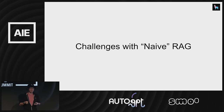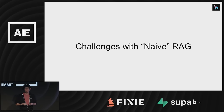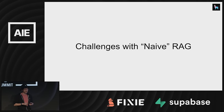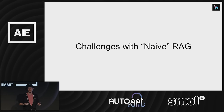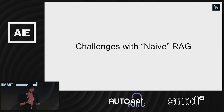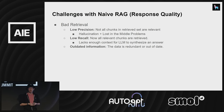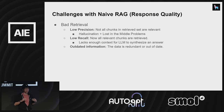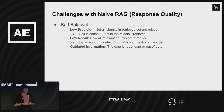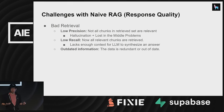As developers are actually building these applications, they're realizing that this isn't quite enough. There are certain issues that are blockers for actually being able to productionize these applications. So what are these challenges with Naive RAG? One aspect is that the response quality is not very good. You run into bad retrieval issues — during the retrieval stage from your vector database, if you're not returning the relevant chunks, you're not going to have the correct context put into the LLM.